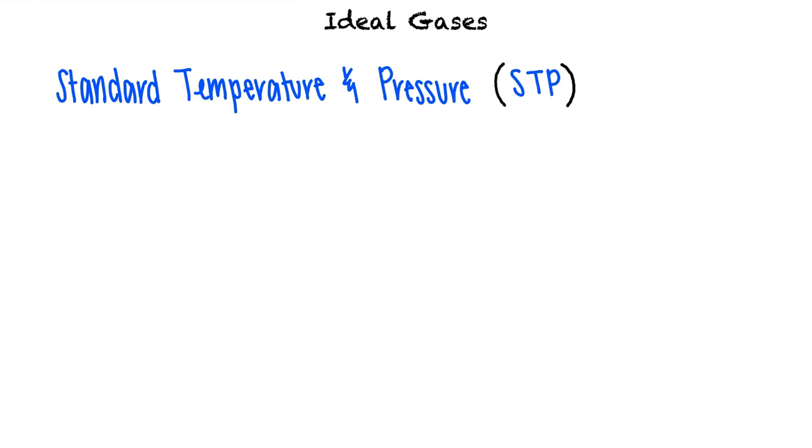Standard temperature and pressure, or STP, is useful for calculating gas density and volume. Standard temperature is zero degrees Celsius. We often measure temperature in Kelvin when dealing with gases, and zero degrees Celsius is equivalent to 273.15 Kelvin.